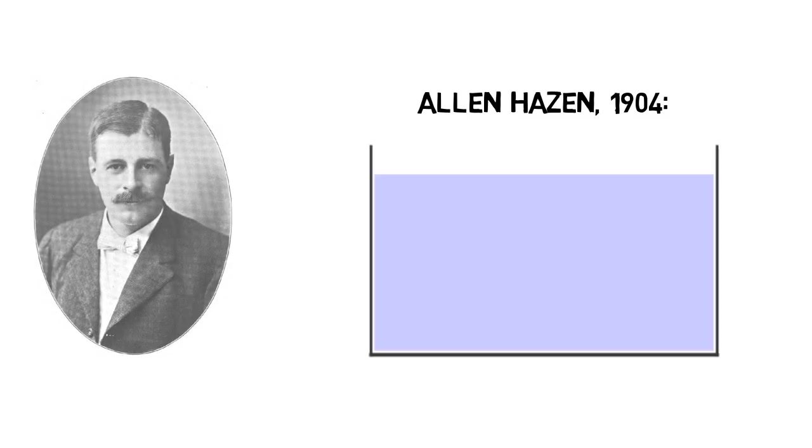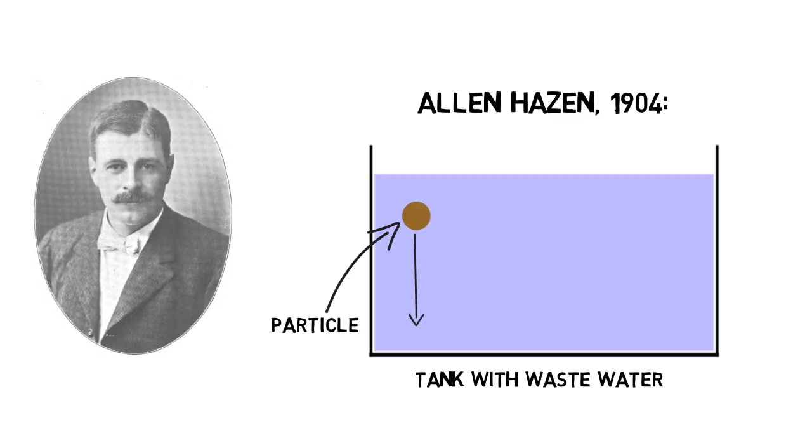Already in 1904, Allen Hazen defined the laws of sedimentation. He noticed that a particle in water can only settle down when its sedimentation velocity, Vs,